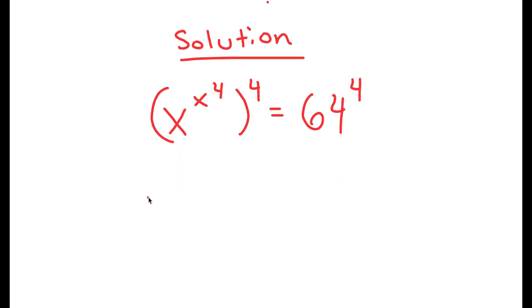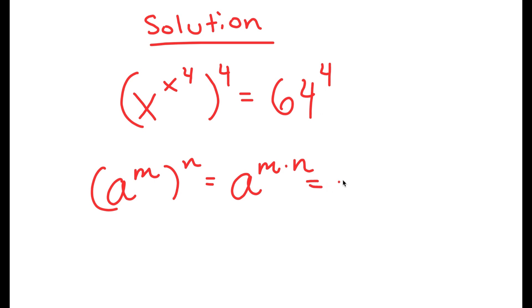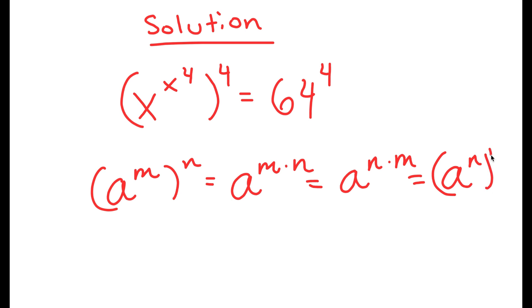Now, if I have something in the form a to the power of m to the power of n, this is equal to a to the power of m times n. However, m and n are interchangeable, meaning this can also be written as a to the power of n times m. So if a to the power of m times n equals a to the power of m to the power of n, then a to the power of n times m should equal a to the power of n to the power of m.